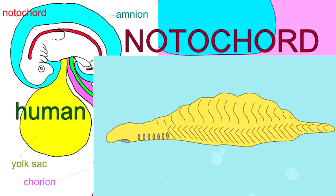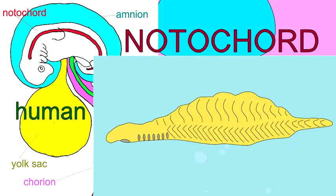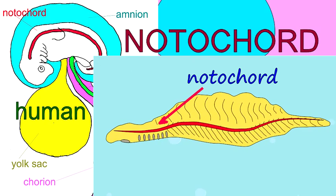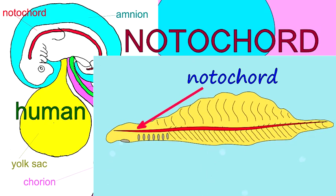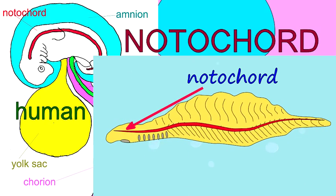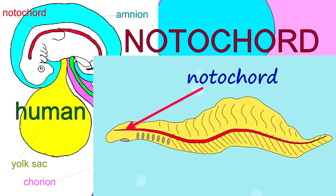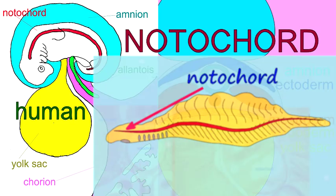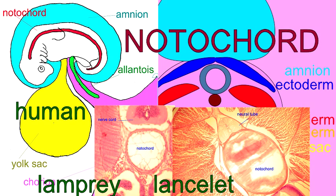In the early vertebrates, from fish through amphibians and reptiles, this was the primary longitudinal support. Before there was a vertebral column, or before the vertebral column was complete in the land vertebrates, the notochord served as the primary support along the longitudinal axis of the body.